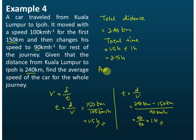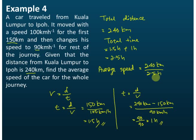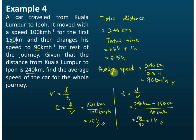Now we can find the average speed. The average speed equals the total distance traveled, 240 kilometers, divided by the total time taken, 2.5 hours. Using your calculator, you should get the answer 96 kilometers per hour. That's how we find the average speed — we find the total distance traveled and then the total time taken using the formula: speed equals distance divided by time.